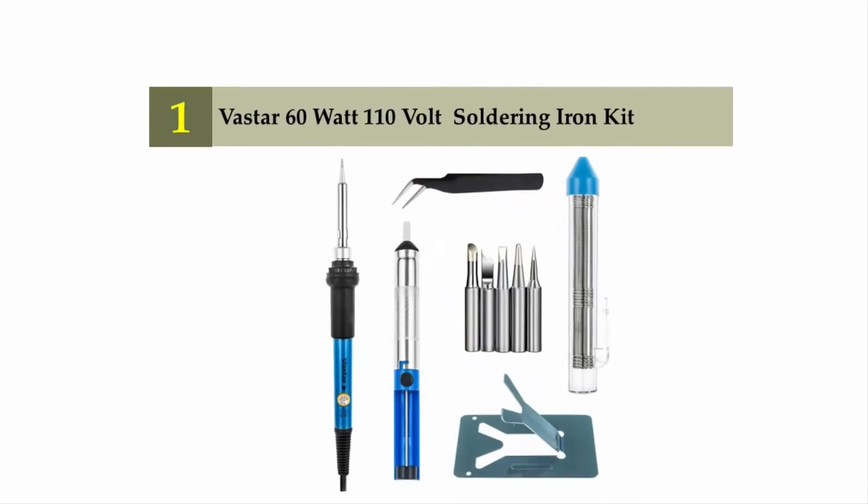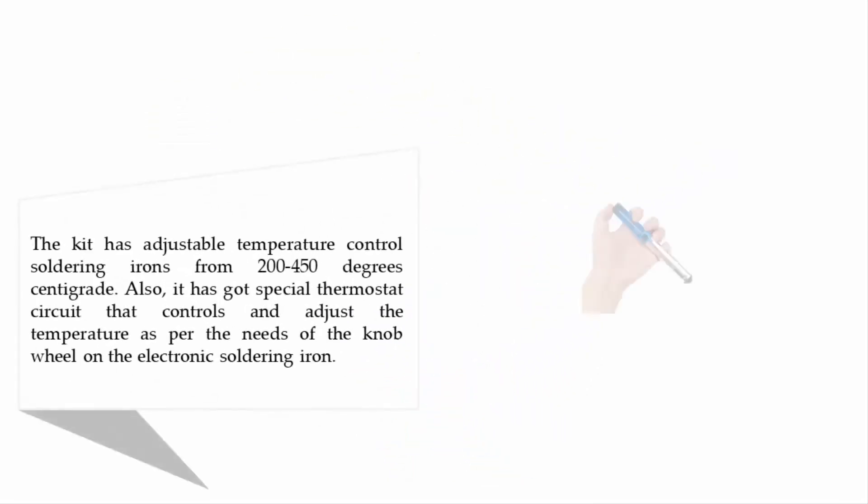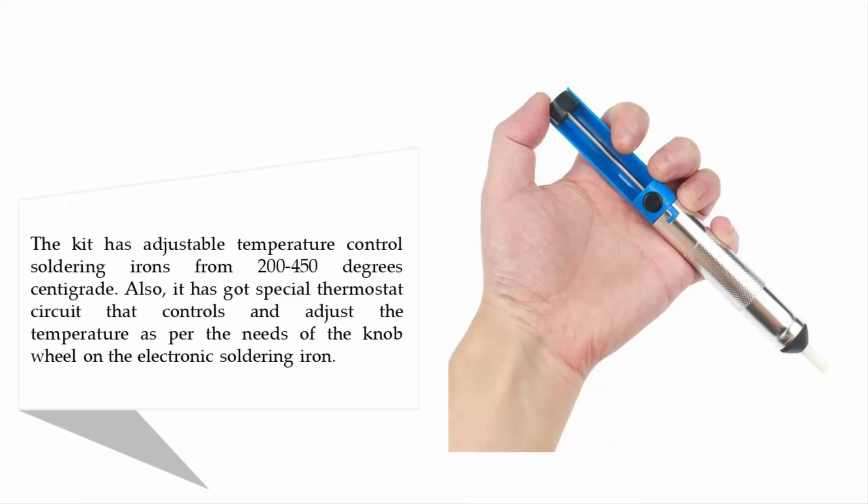And coming in at number one of our list: Vastar 60 watt 110 volt soldering iron kit. The kit has adjustable temperature control soldering irons from 200 to 450 degrees centigrade. Also it has got a special thermostat circuit that controls and adjusts the temperature as per the needs of the knob on the electronic soldering iron.